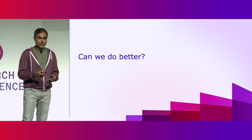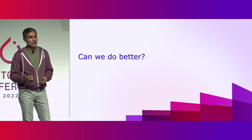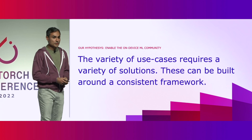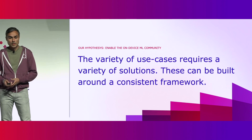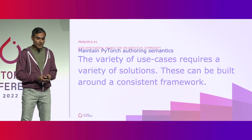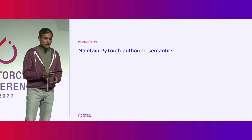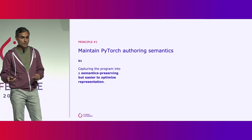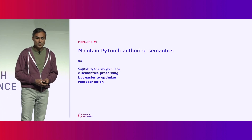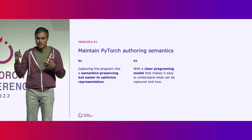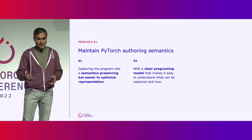In PyTorch, we've always been very adamant about keeping semantic consistency across the stack, but we need to scale it up to this growing set of devices. Our hypothesis is that we need to power an ecosystem where both narrow solutions and general ones can be built on a common platform within PyTorch. So with that in mind, we're building a new software stack for on-device machine learning anchored in four principles. The first is we want to maintain PyTorch authoring semantics — extracting a representation that is non-Pythonic and easier to lower and optimize, while keeping the programming model easy and intuitive.